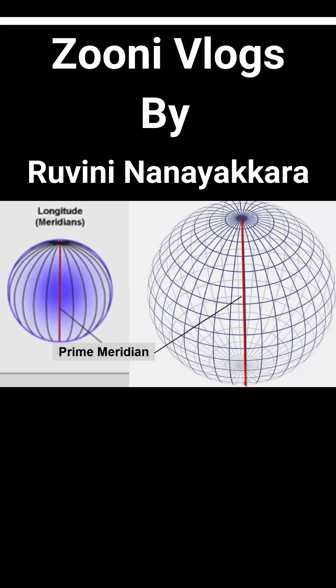The lines drawn vertically from the north pole to the south pole are called longitudes. The red color line drawn across the globe is called the prime meridian.